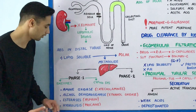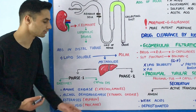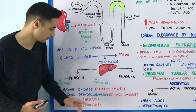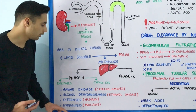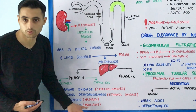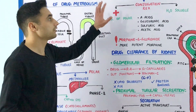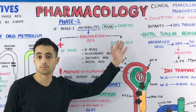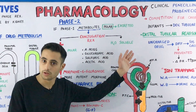Alcohol dehydrogenase is used for ethanol oxidation. Esterases and hydrolysis are used for aspirin and procaine. If phase 1 metabolites are already polar, they are excreted from the body immediately.